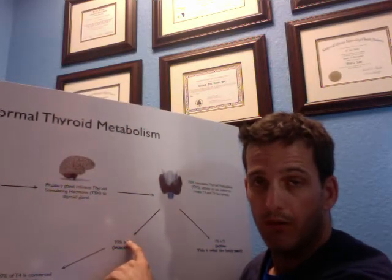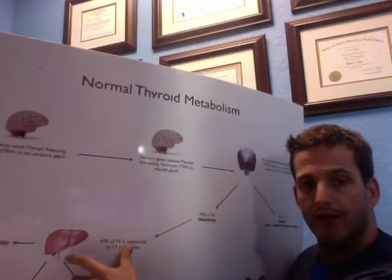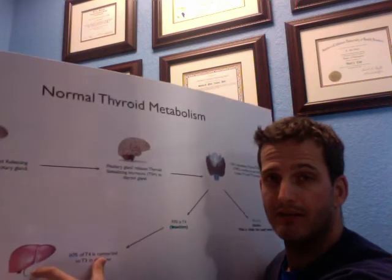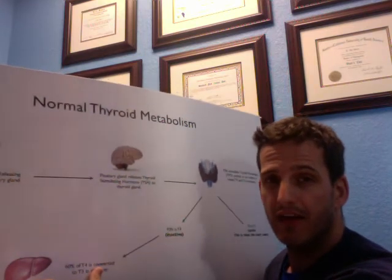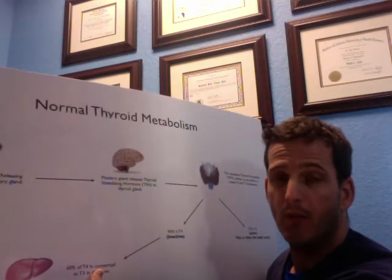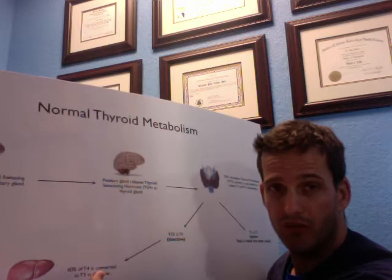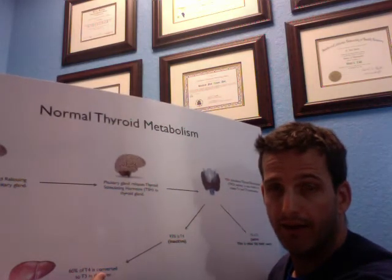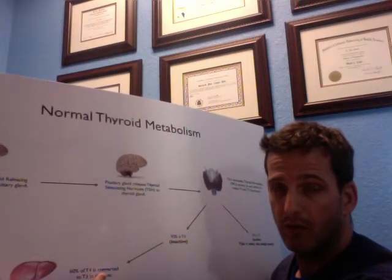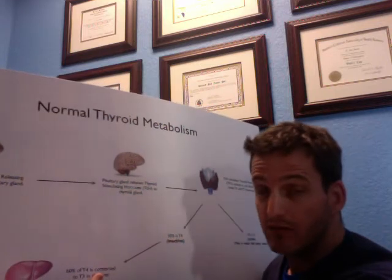Thyroid binding globulin can also cause problems, but that's another webinar altogether. The liver is responsible for grinding down that T4 into T3. So if a person has detoxification issues, an infection, heavy metal toxicities, xenobiotics, or one of the most common under-discussed American health conditions — non-alcoholic fatty liver syndrome, called NASH — then the liver is not doing a good job of what it needs to do, and that will impact your thyroid. You can take T4 medication until the cows come home, but if you're not converting T4 into T3 in the liver, it won't help.